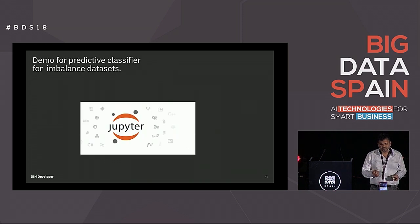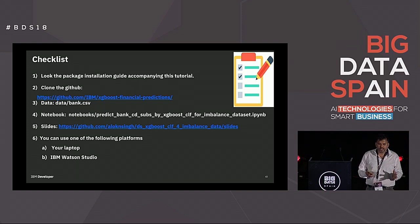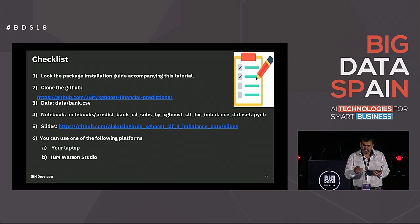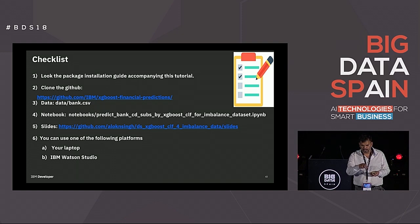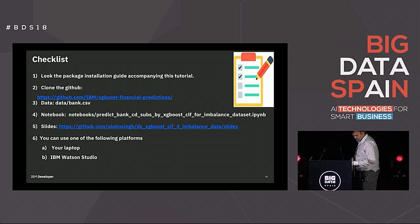I'm going to show a bit of the Jupyter notebook — I have about 10 minutes. I may not go through all the details since it's a large notebook — around 50 to 60 pages printed. The notebook is on IBM's GitHub and the slides are on my personal homepage. You can run it on your laptop or in IBM Watson Studio.